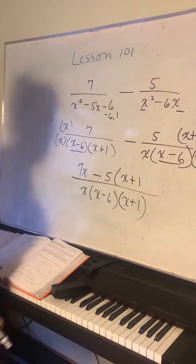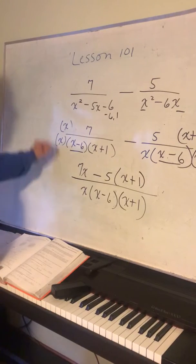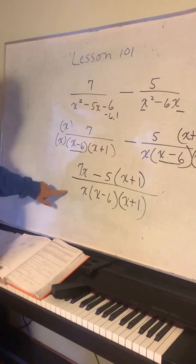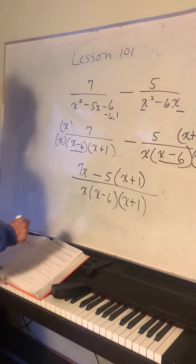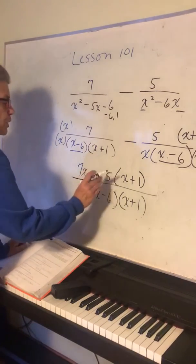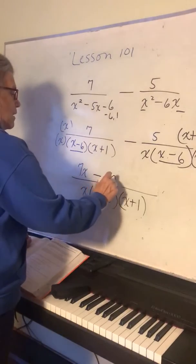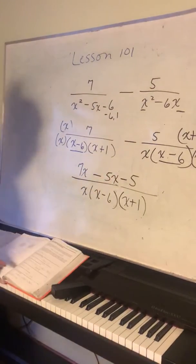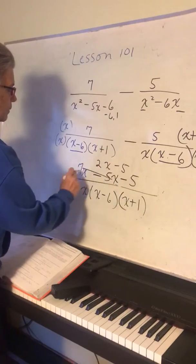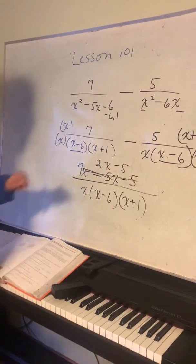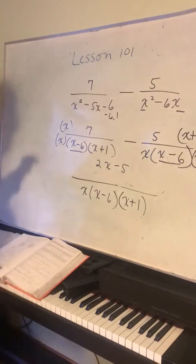They went ahead and simplified the top. You can leave the bottom factored as is — that's fine for this class. On the top, distribute to get 7x minus 5x minus 5, which simplifies to 2x minus 5. So the final answer is 2x minus 5 over x times (x minus 6) times (x plus 1), and that's as far as you can go.